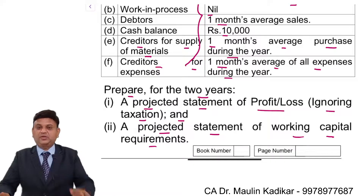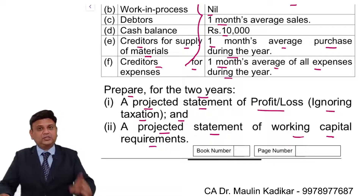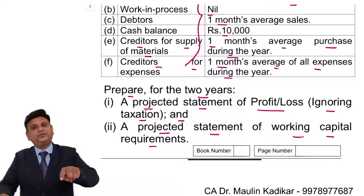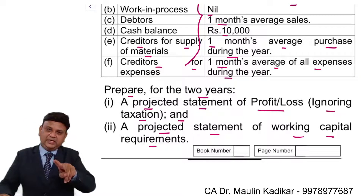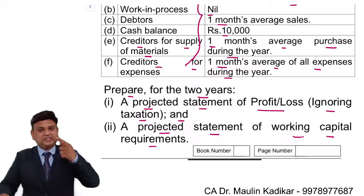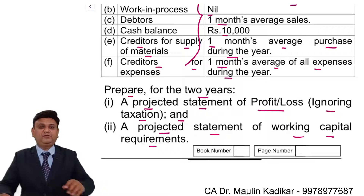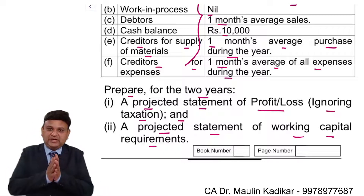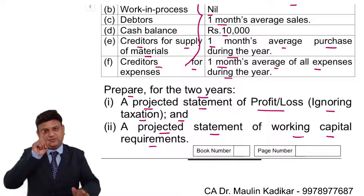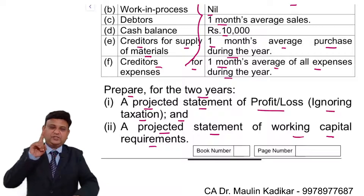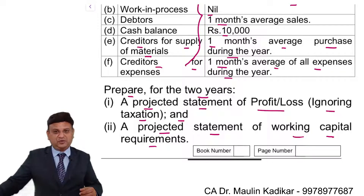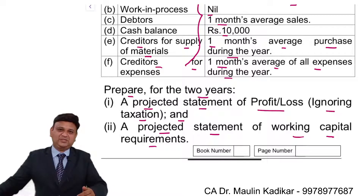I request all of you to do the answer for projected profit or loss for year one first, then put your answer in the chat box. You do for first year, then I will do. You do for second year, then I will do. Please try to do the answer for first year only, not for both years. Projected profit or loss — first year only.